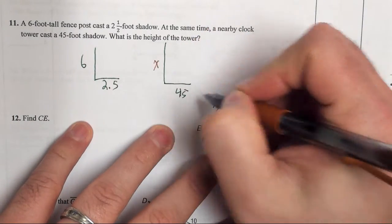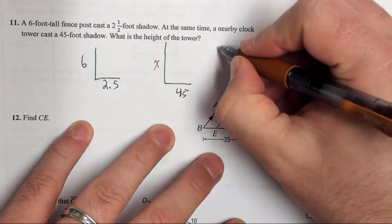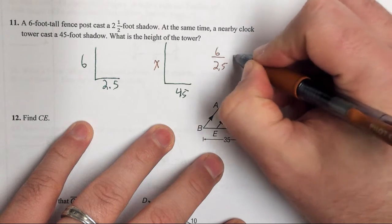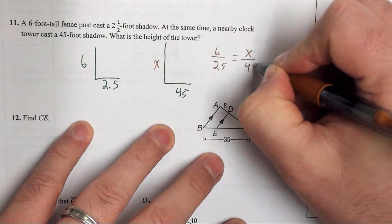So all we do is we make a proportion out of these two. Six over 2.5 is equal to X over 45.